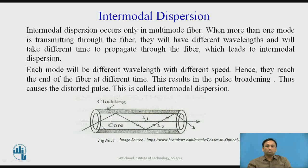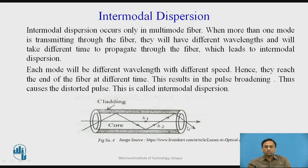For single-mode fiber, only the fundamental mode is transmitted, so there is no problem receiving the signal at the receiver side. But in multimode fiber, when more than one mode is transmitted, due to the refractive index of the core and the angle of incidence, lambda 2 and lambda 1 travel at different speeds — in both graded-index and step-index — and reach the receiver at different times. This causes overlapping of the two signals, resulting in pulse broadening, which is known as intermodal dispersion.